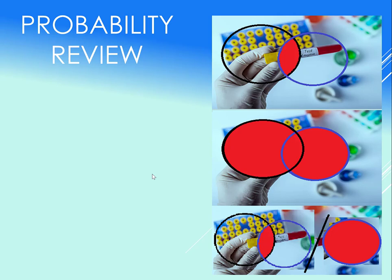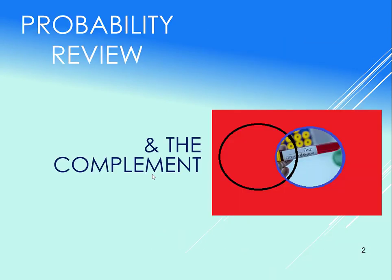In this video we're going to review basic probability rules: the AND, the OR, the GIVEN, and the COMPLEMENT.